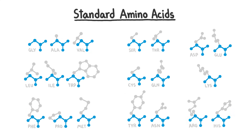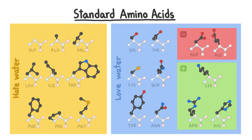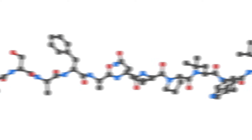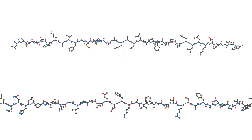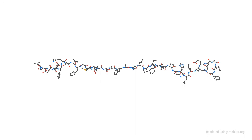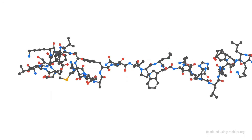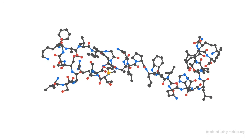There are 20 different amino acids, each with a side chain that has a different shape and different properties. Thousands of amino acids can combine to form a single chain, which depending on its length and the order in which the amino acids are linked together, can fold into different and unique structures.